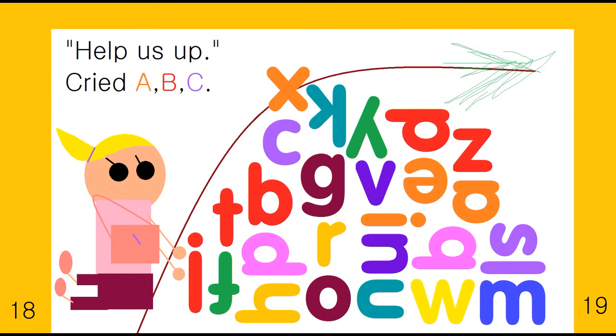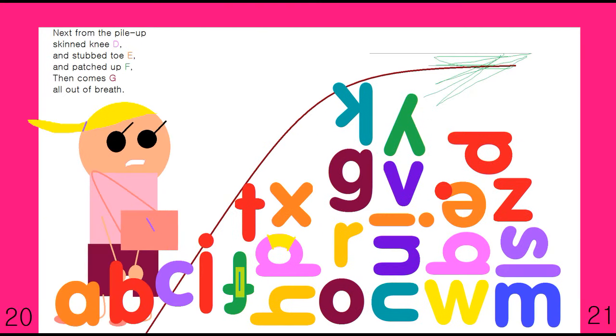Help us up, cried A-B-C. Next, from the pile-up skinned-knee D, stubbed-toe E, patched up F. Then comes G, all out of breath.